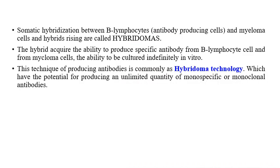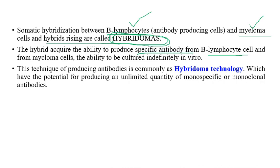Somatic hybridization between B-lymphocytes and myeloma cells produces hybrids called hybridomas. These hybridomas acquire the ability to produce specific antibodies, inheriting this capacity from the B-lymphocytes. They can be cultured in vitro using tissue culture techniques to produce the specific antibodies required.